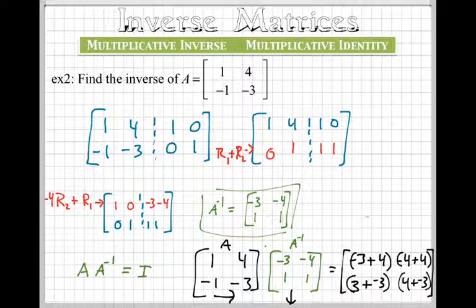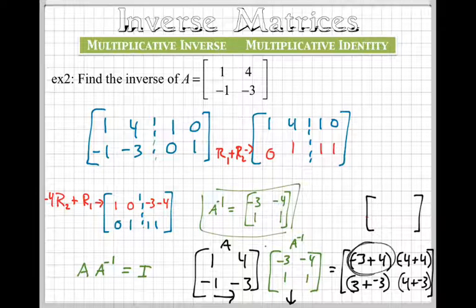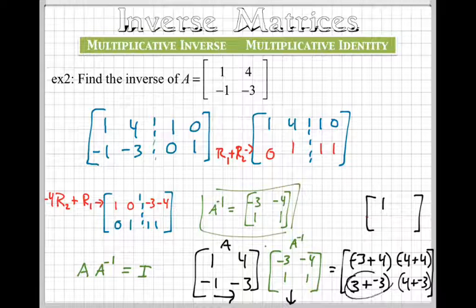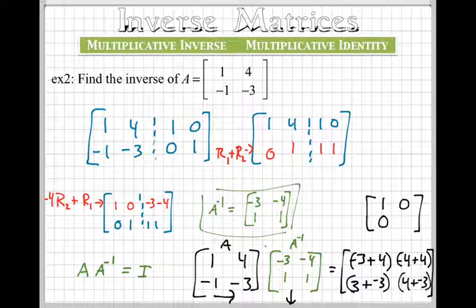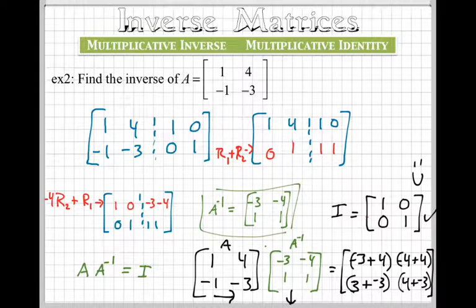So now check this out. If I simplify all this, this one right here, negative 3 and 4 is 1. This one right here, 3 and negative 3 is 0. This one right here adds to 0. And this one right here adds to 1. And that is our identity matrix. So it works. Smiley face. This actually is the inverse of the matrix.